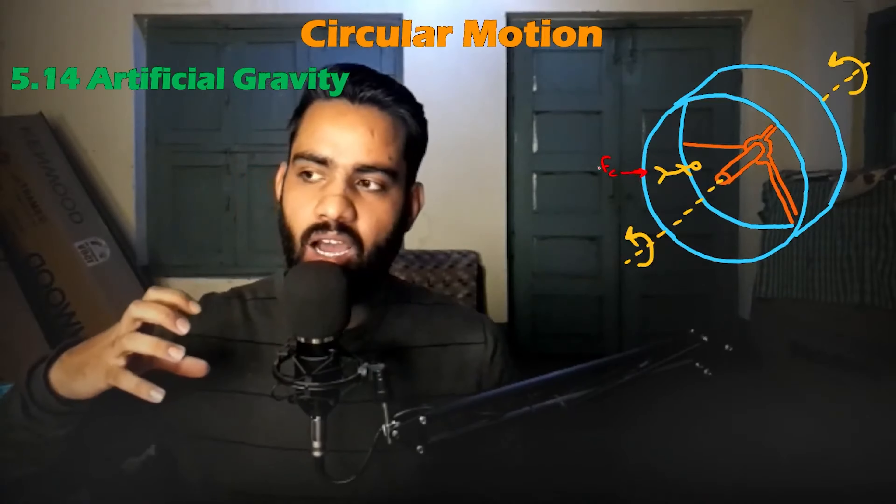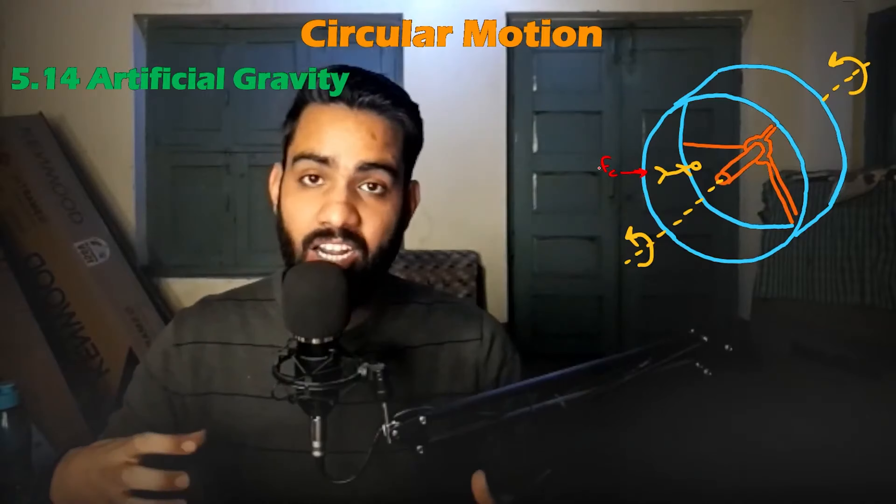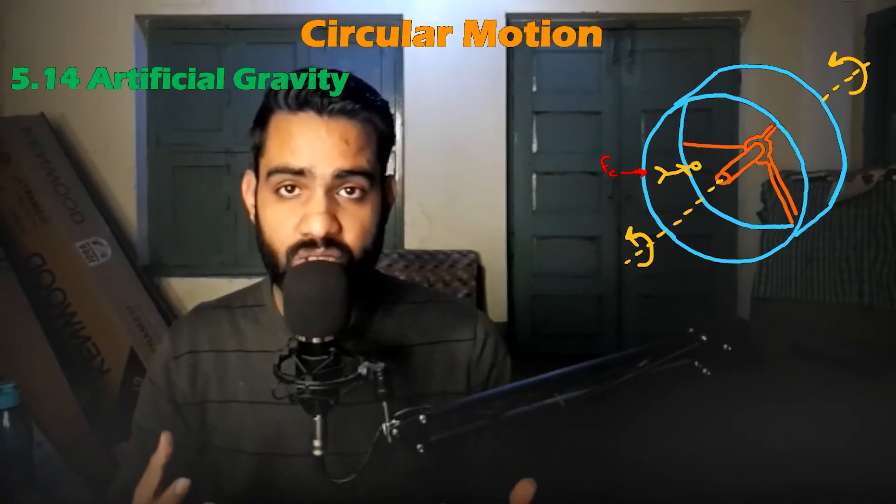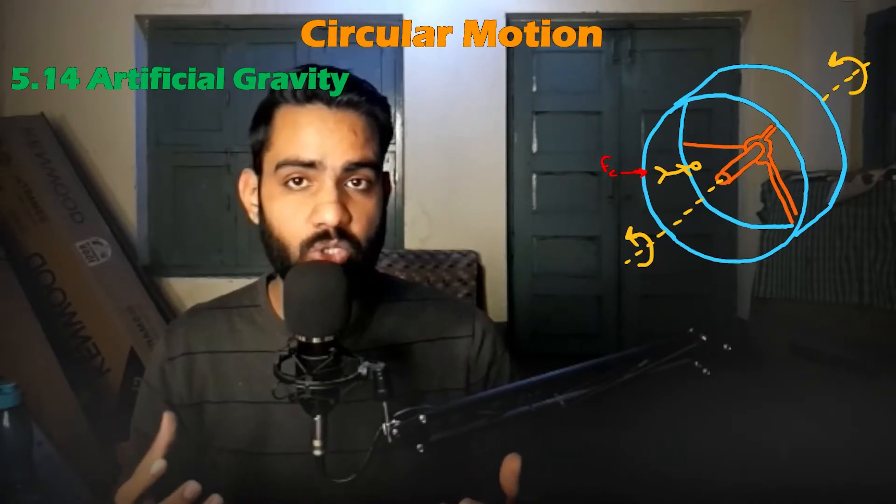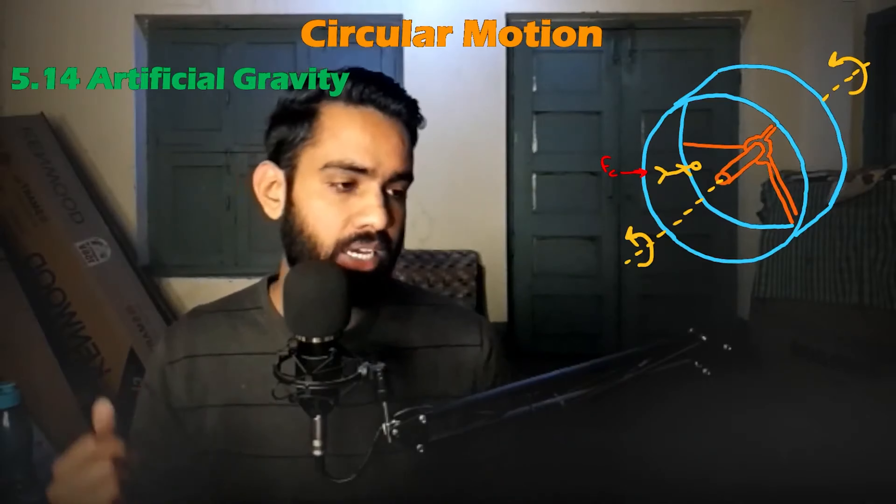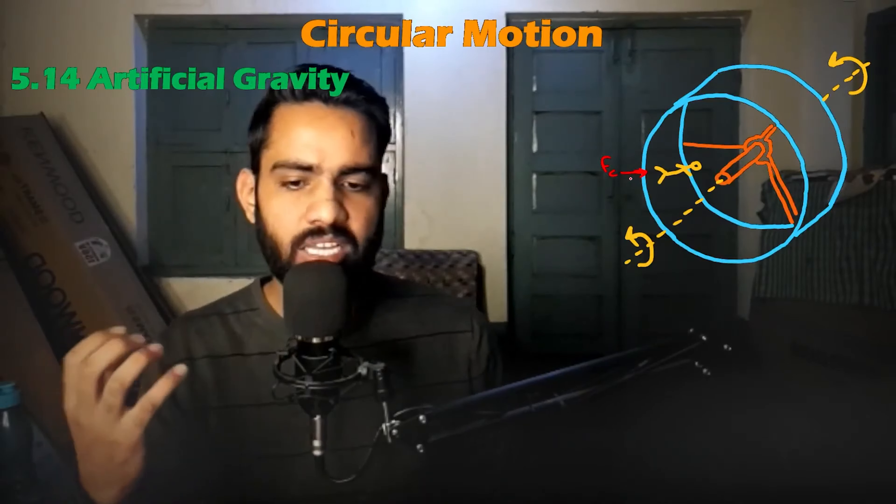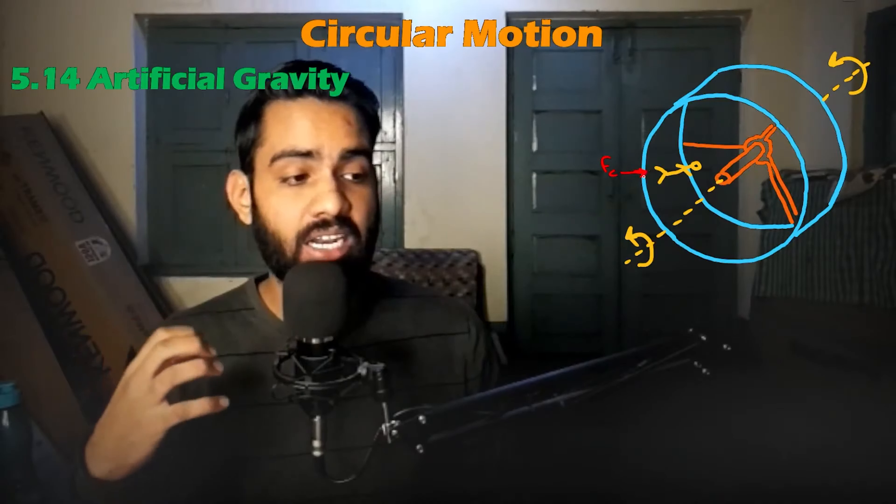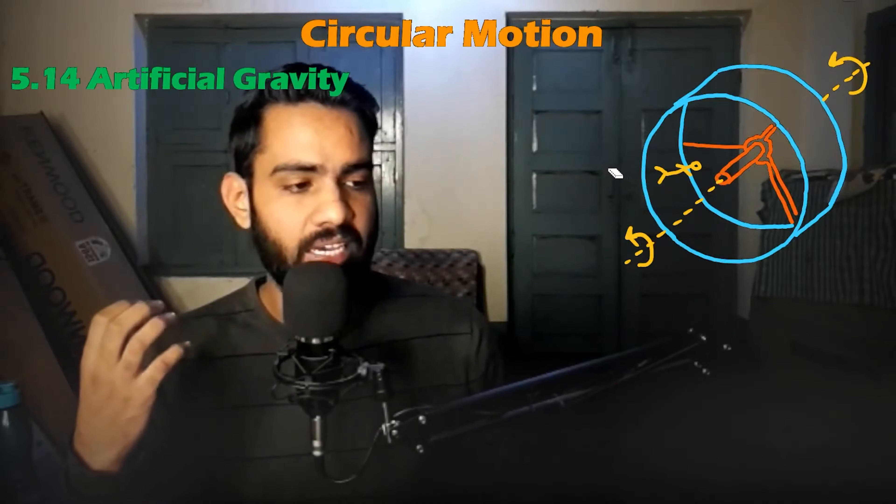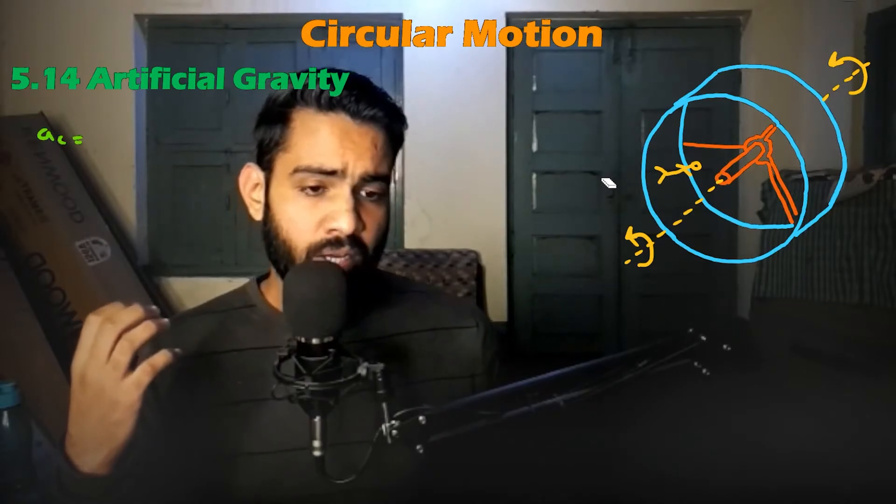So here, the artificial gravity or artificial gravitational force—basically the gravitational force will be centripetal force which will act as a gravitational force. So this is a hypothetical scenario. We will see which variables it depends on and how we can vary them.